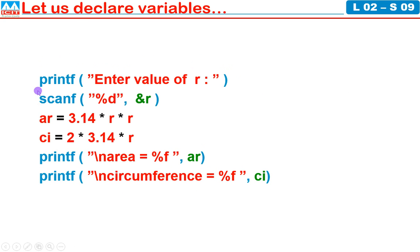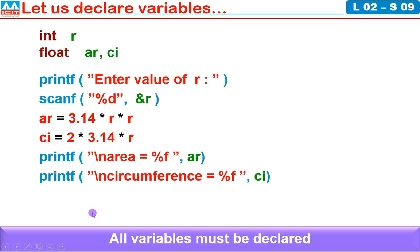Now we completed taking input, performing calculation and giving output. In this program we used some variables: R, ar, and ci - three variables. We define here int r. By 3.14 into 3 into 3 you are going to get floating point value. So float ar comma ci. After completion of code design, you need to define all the variables. All variables must be declared.